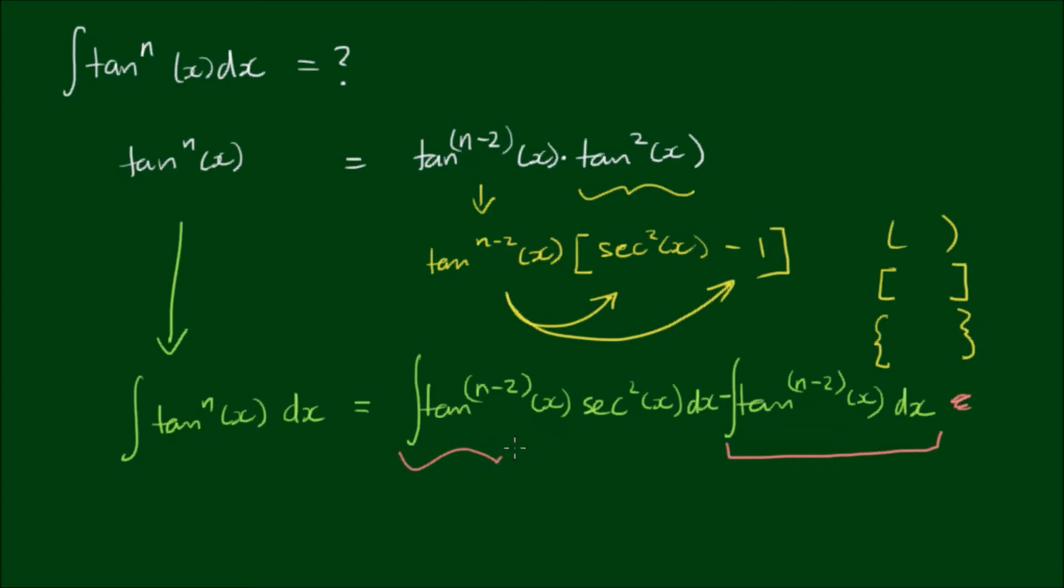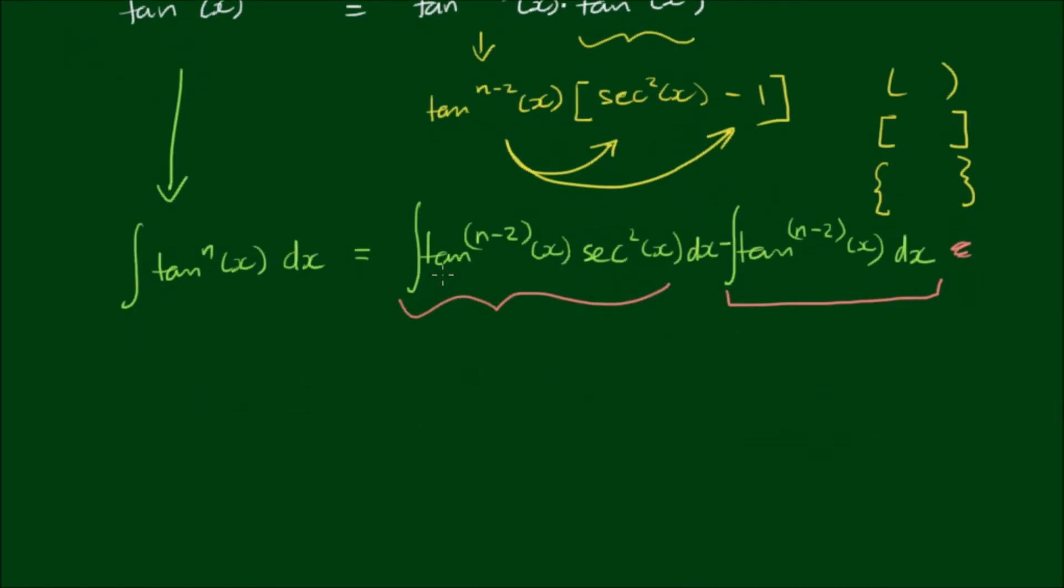But for this first integral here, this integral of tan to the n minus 2 power by sec squared, intuitively you might use integration by parts because we have two parts here. But if we take this second part here, this sec squared of x dx, and notice that it is a derivative of the tangent function. So let's make the substitution u equals the tangent of x.